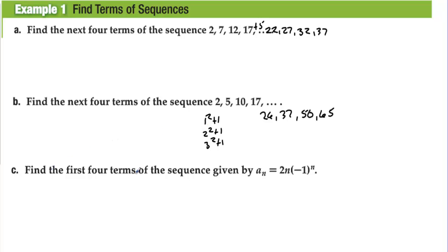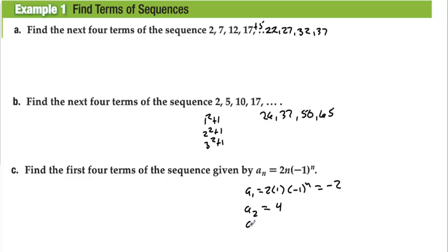Find the first four terms of the sequence given by the explicit formula. A sub 1 would be 2 times 1 times negative 1 to the n, which equals negative 2. A sub 2 would be positive 4, A sub 3 would be negative 6, and A sub 4 would be positive 8.